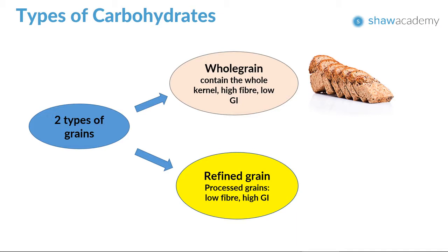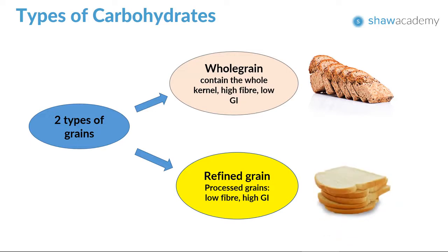The milling process also removes dietary fiber, iron, and many B vitamins. As the grain shell is removed, refined grains are usually low in fiber unless they have been fortified, and they usually fall into the high GI category — white bread being an example.